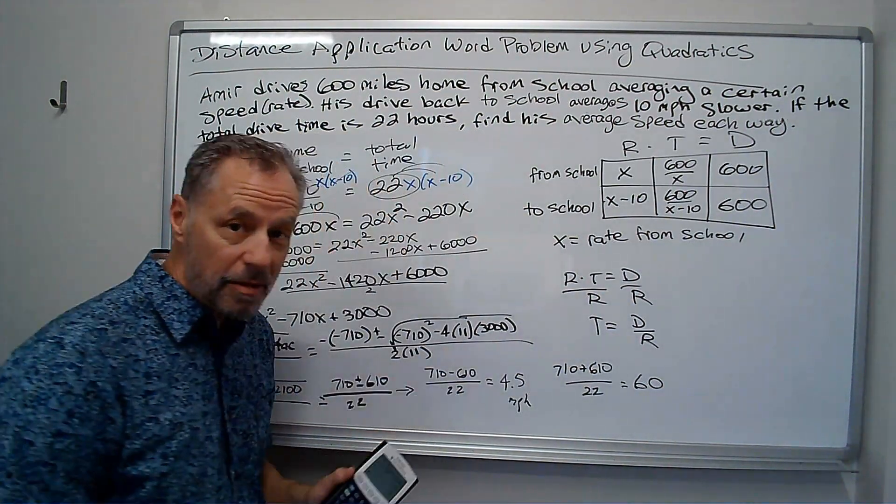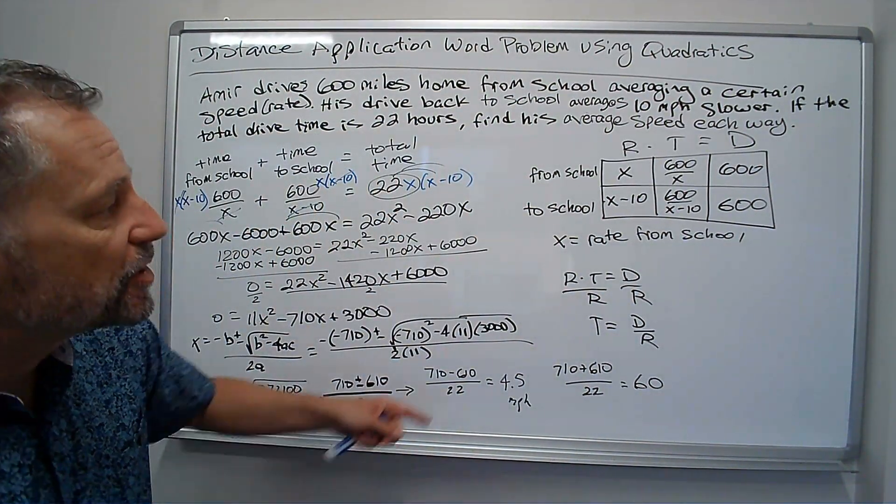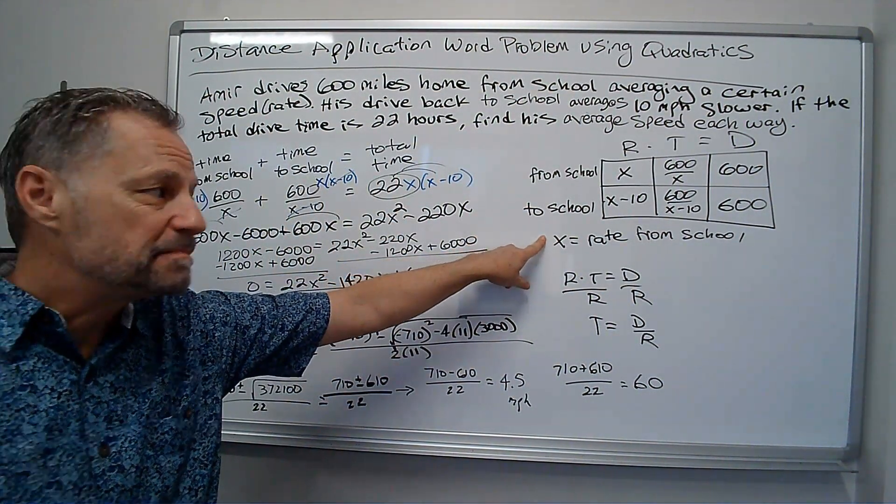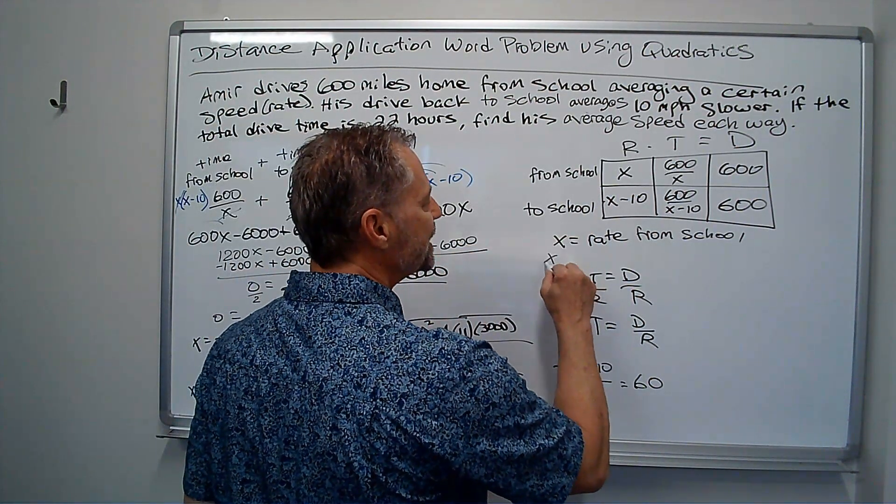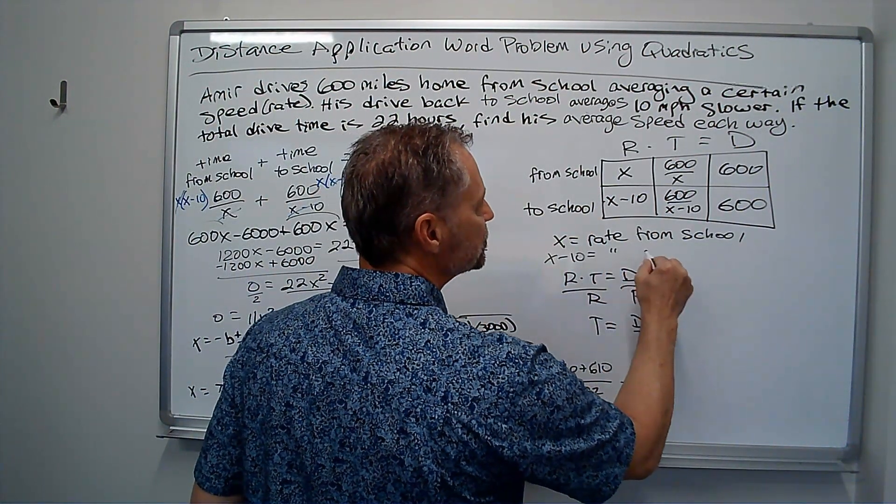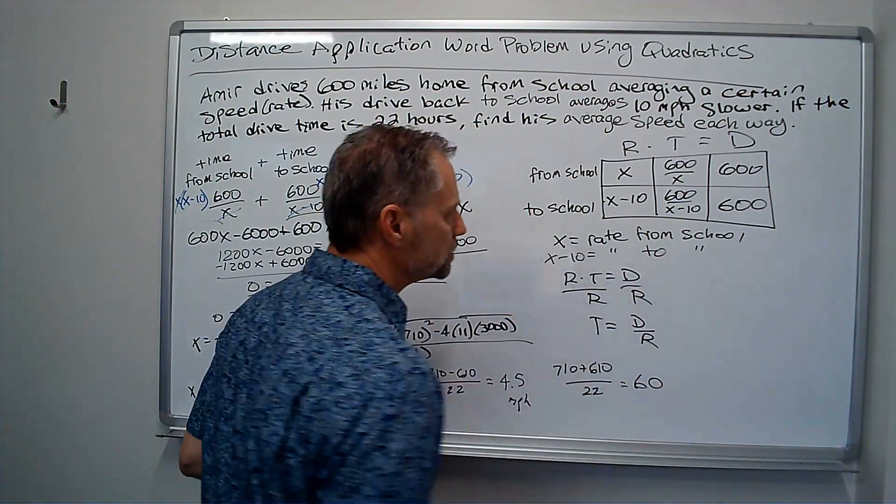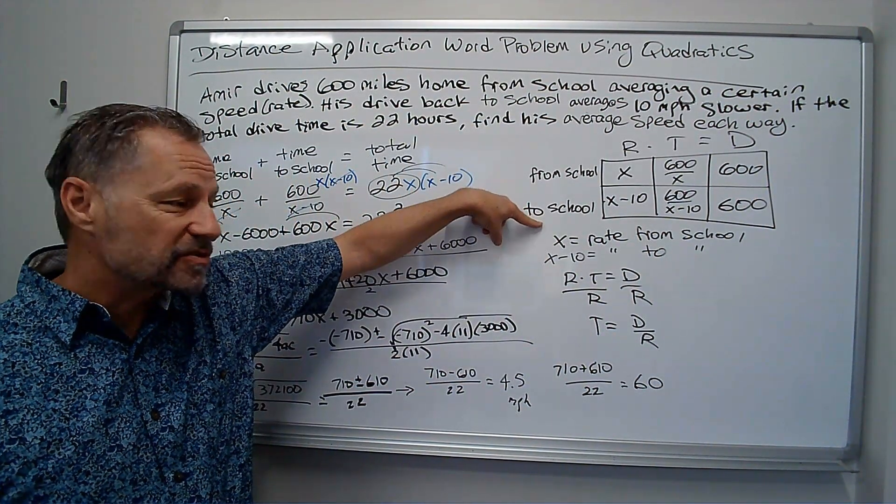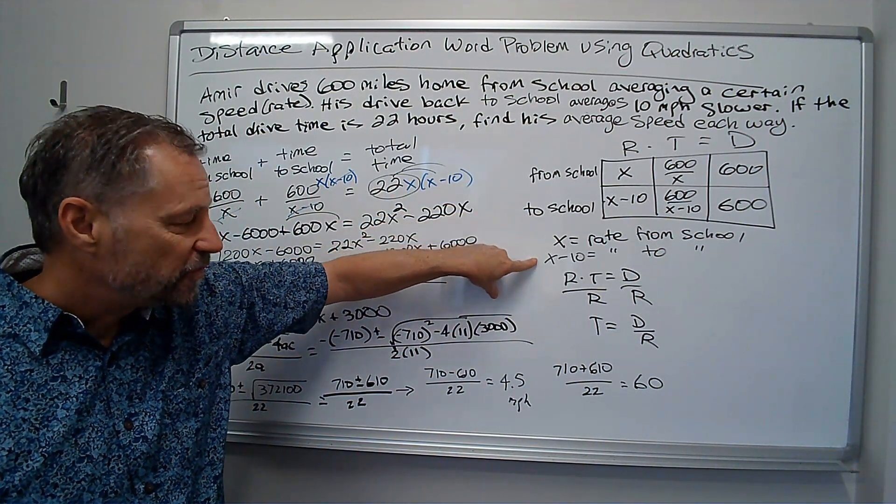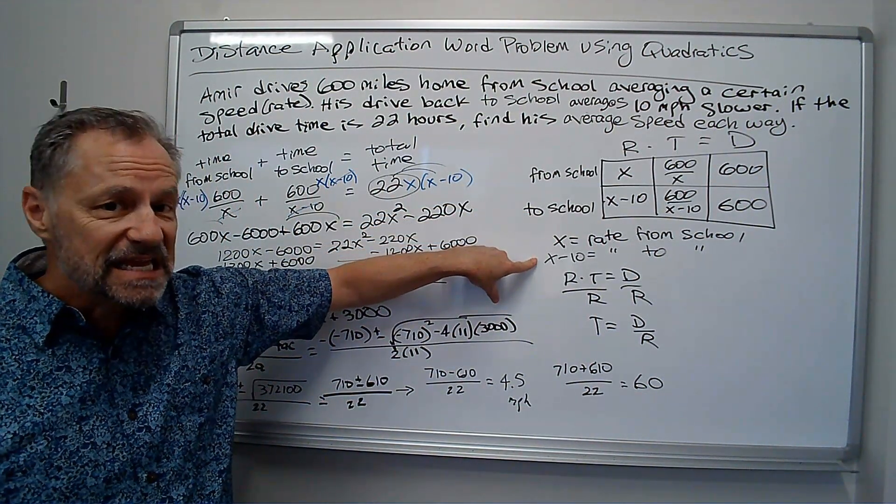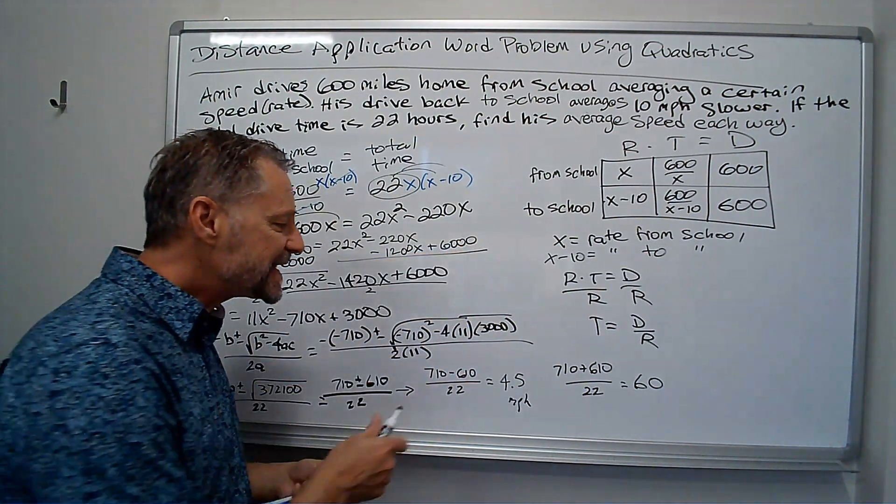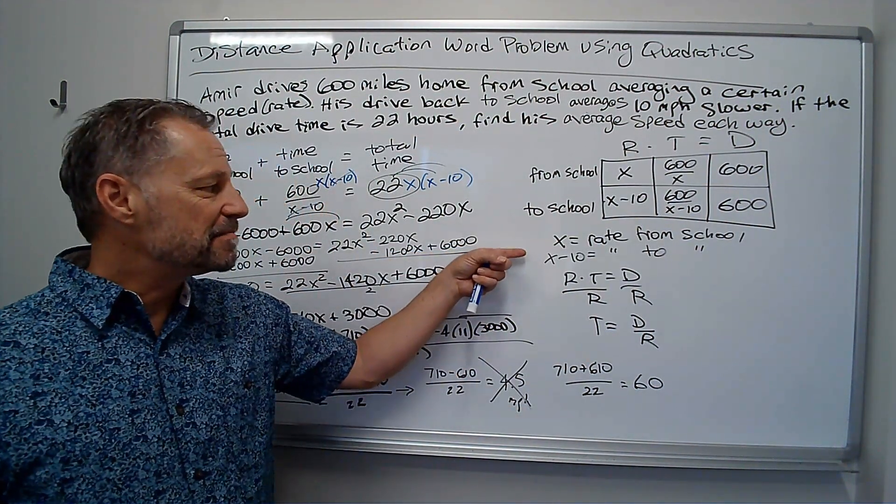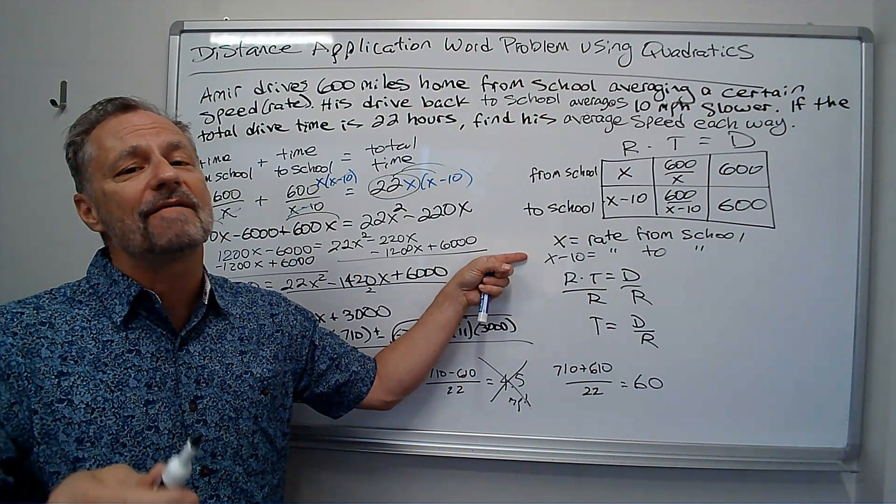Now, here's the problem. Remember, the rate or the speed from school was X. But X minus 10 was the rate to school. If I have about 4.5 miles per hour from school, 4.5 minus 10 is a negative about 5.5 miles per hour. This one can't work.